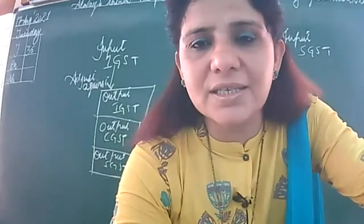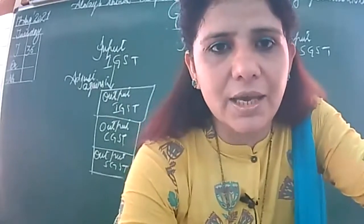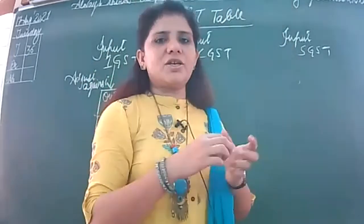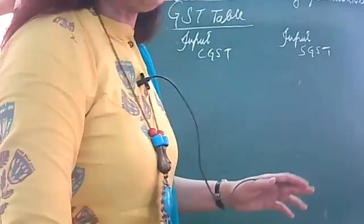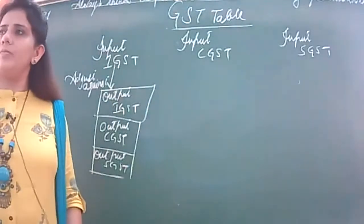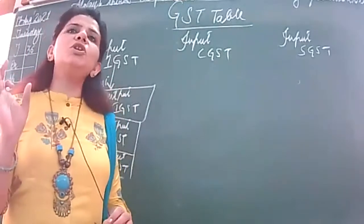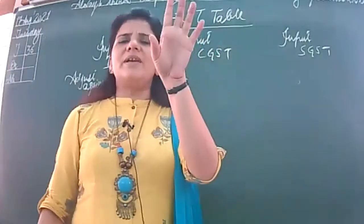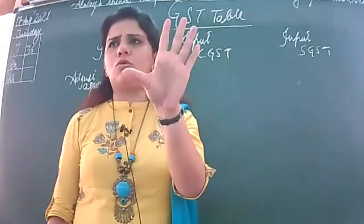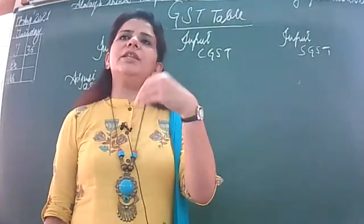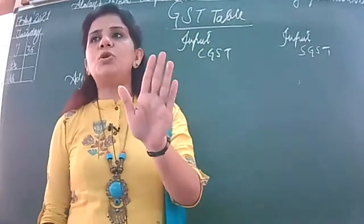This is going to help us understand the concept because now we learned how to pass journal entries and how we were adjusting things when we were paying tax to the government. The first question is whether the output was more or input was more. If you have bought 1000 units and sold 700 units, you have 300 units remaining, so it is not necessary that your output is going to be more than input.